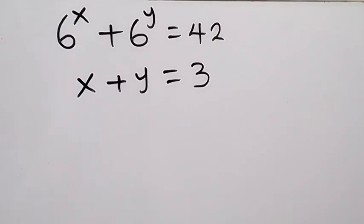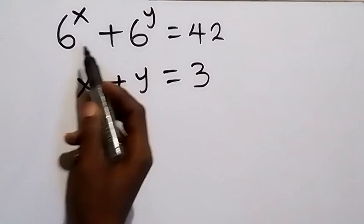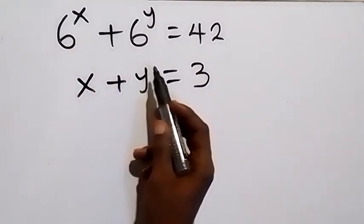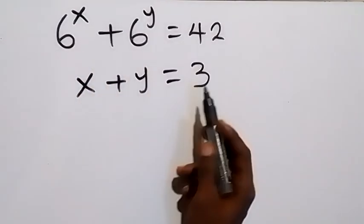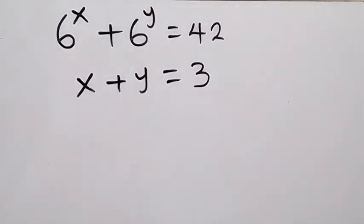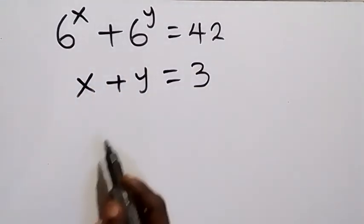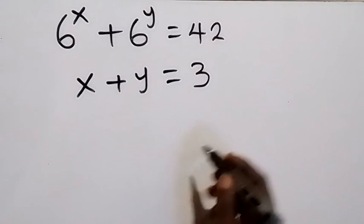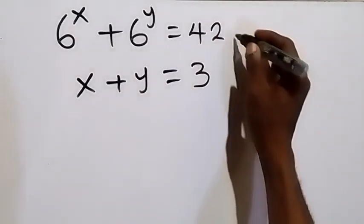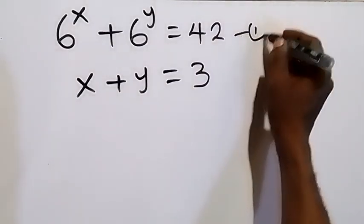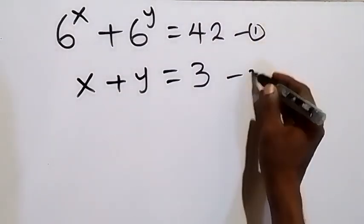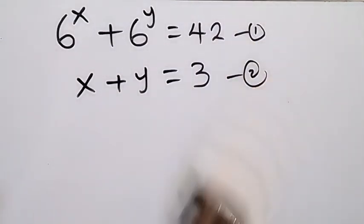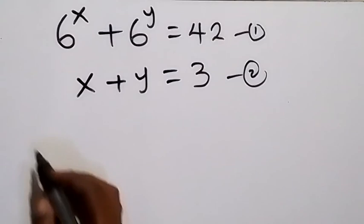Hello, you are welcome. How to solve this problem: 6 raised to power x plus 6 raised to power y equals 42 — let's call this equation 1. Then x plus y equals 3 — let's call this equation 2.